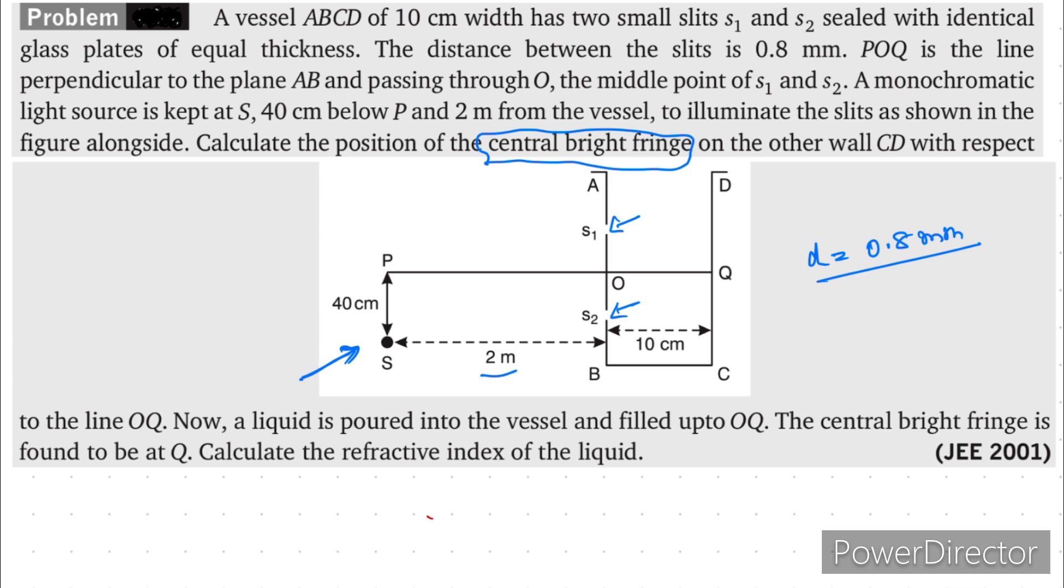On the other wall CD with respect to the line OQ. So suppose our central bright fringe is coming here, which is the point R. Now we have to see what is the path difference of different rays coming to point R and interfering. So let us draw the ray diagram.